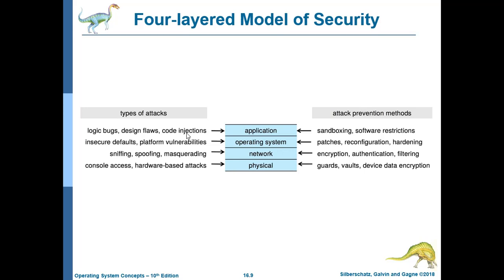Attack prevention methods include sandboxing and software restrictions. Sandboxing — from the literal sandbox where children build things — means running a program inside a sandbox environment. If that program is malicious or wreaks havoc, its effects are contained only inside the sandbox and the whole computer system is not affected.